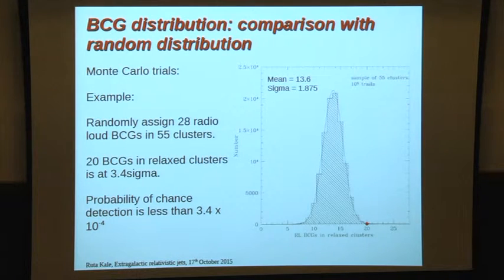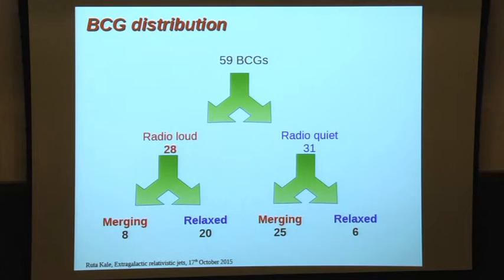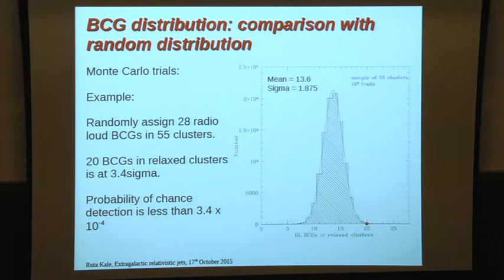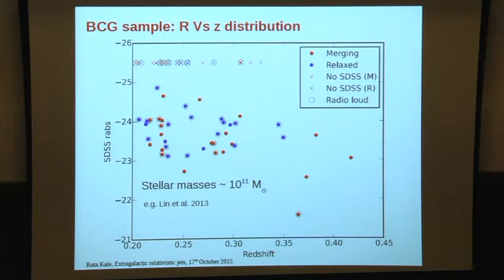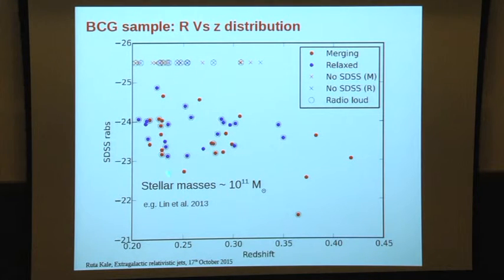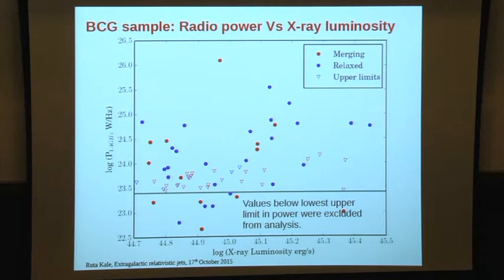We asked whether this disparity could be by chance. We made Monte Carlo trials and established that it is not by chance — there is significantly higher radio loudness in relaxed clusters. Plotting absolute magnitude versus redshift, color-coded blue for relaxed and red for merging, shows no obvious bias — they all fall in a narrow range of R-band magnitudes. We also plotted radio power versus X-ray luminosity of the cluster and eliminated BCGs with radio powers below our upper limits for constructing the radio luminosity function.